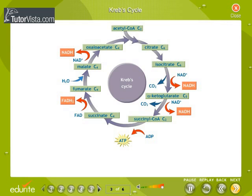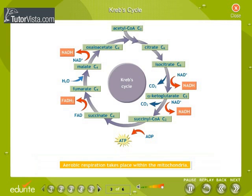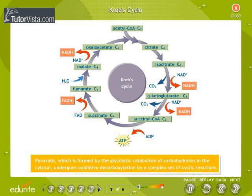The Krebs cycle was first elucidated by British biochemist Sir Hans Krebs in the year 1937. Aerobic respiration takes place within the mitochondria. Pyruvate, which is formed by the glycolytic catabolism of carbohydrates in the cytosol, undergoes oxidative decarboxylation by a complex set of cyclic reactions.